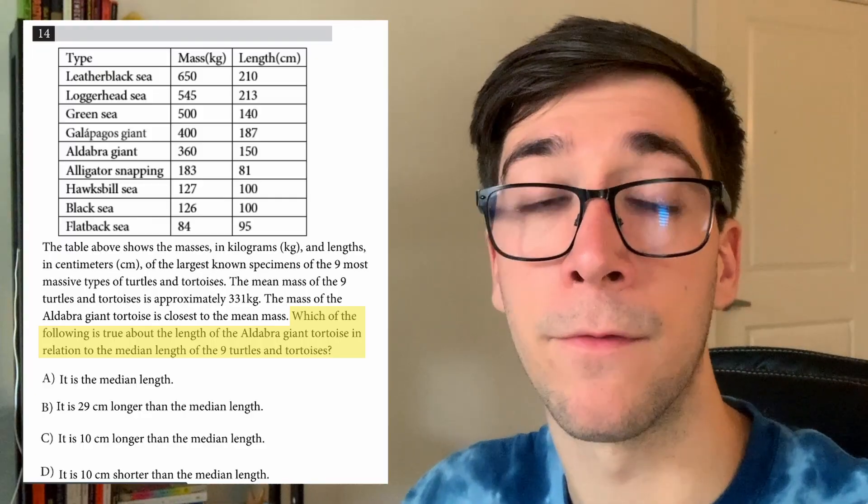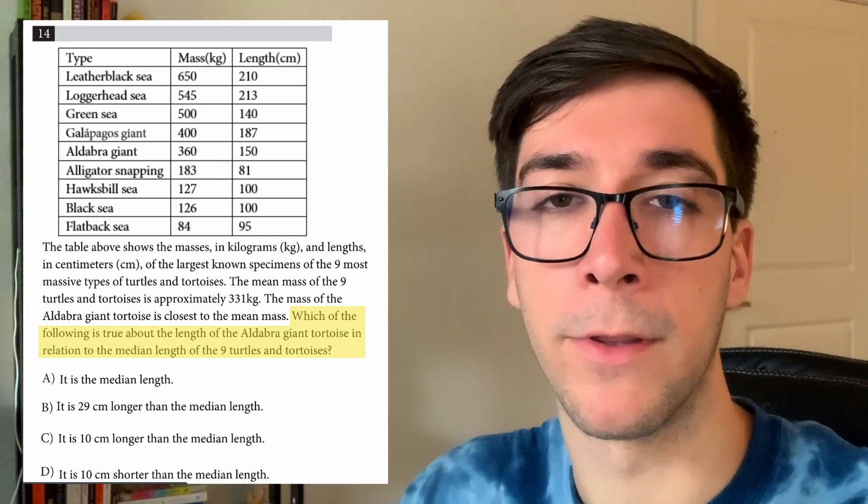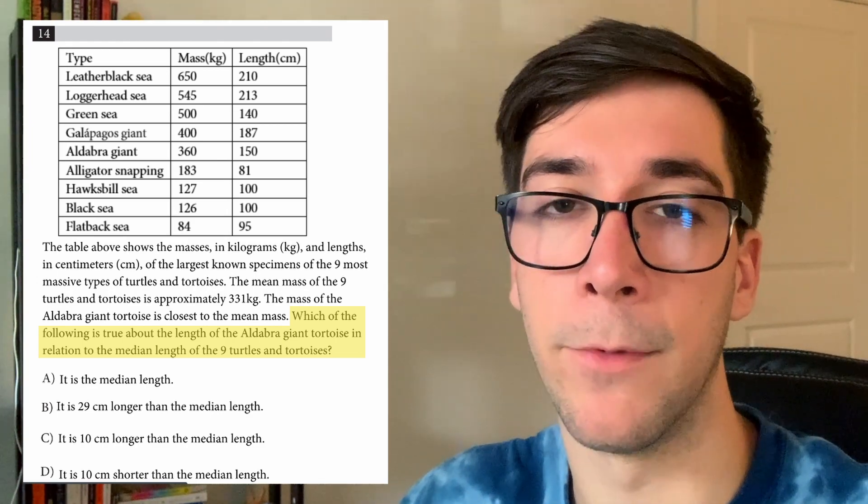Tip number two: you always want to identify what is being asked for first. When you look at a question, skip all the information and text and go to the last sentence first — they're often going to tell you what they're asking for, like what is x. Skipping right to this part saves you time and sets your intentions with the problem so you know exactly what you're looking for. Then you can go back to the information and use the numbers you actually need.